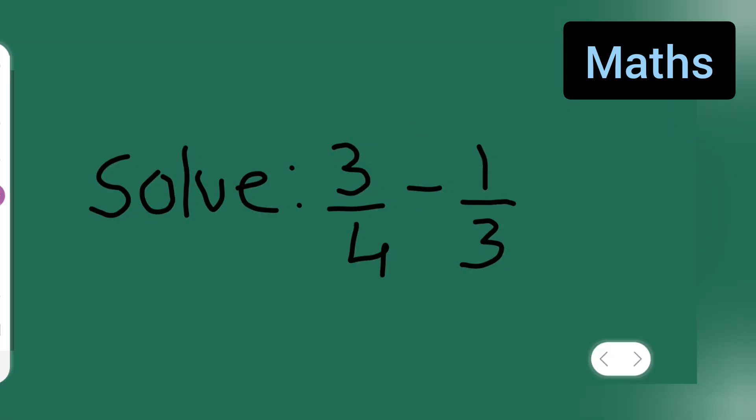This class of mathematics, today's question is taken from class 6 maths. We have to subtract this number: 3 upon 4 minus 1 upon 3. When the denominator is different, many of you will find it difficult to subtract.